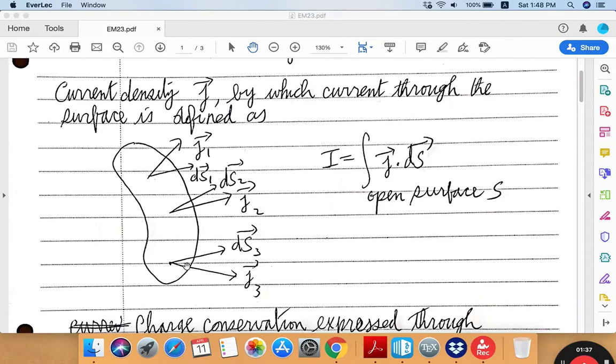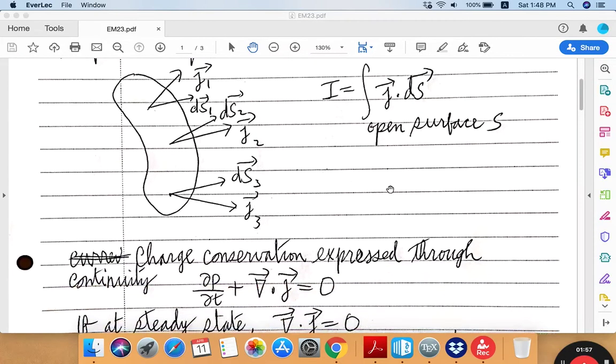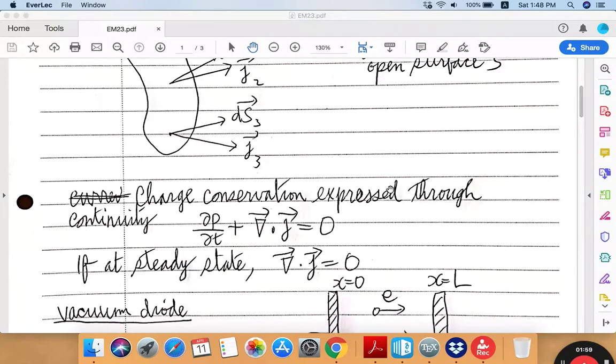then integrate this thing over the entire area of the open surface. And that gives you the current that passes through the open surface. So that's how you end up deriving the amount of current by integrating the current density over this surface. So the charge conservation which must hold in any physical system implies that there be a continuity equation.